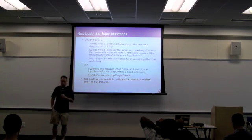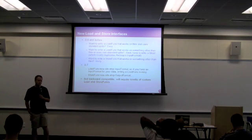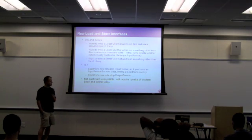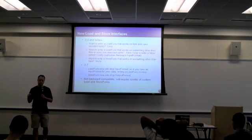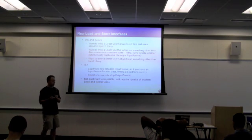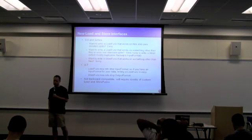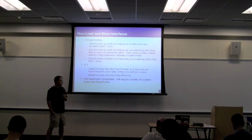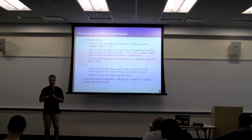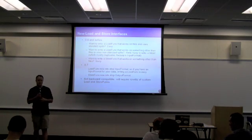So in 0.7, we rewrote our load func and store func interfaces to be very closely aligned with Hadoop's input and output formats. Now we view a load function as just the piece on top of the input format that takes the key and value pair that the input format returns for you from its record reader and just parses that into fields for Pig to handle. And the same with the store function. We rewrote it to sit on top of output format, and its job is just to take a Pig record and turn that into a key value pair that can then be stored by that output format.